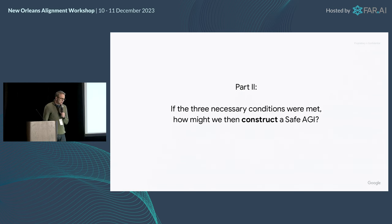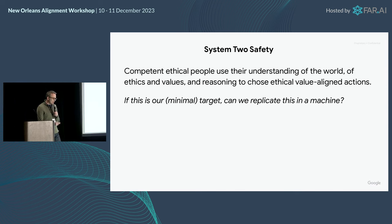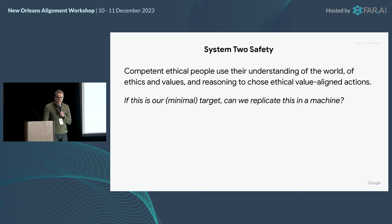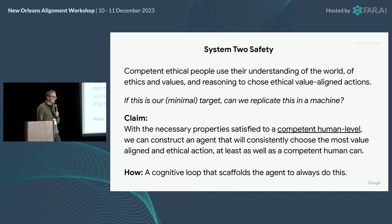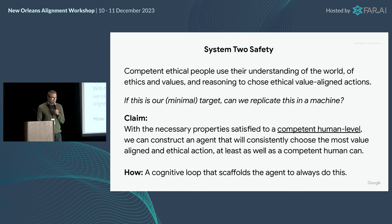Part two: if the three necessary conditions are fully met, how might we construct a safe AGI? Competent, ethical people use their understanding of the world, values, ethics, and reasoning to choose ethical, value-aligned actions. If this is our minimal target, can we replicate this in a machine? I'm going to say yes — we do it in the obvious way. With the necessary properties fully satisfied, we can construct an agent that will consistently choose the most value-aligned and ethical action at least as well as a competent human can. We just create a cognitive loop that scaffolds the agent to do that.